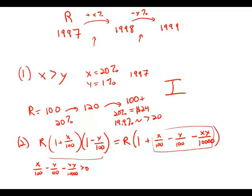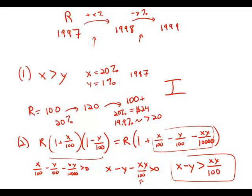Well, first thing I'm going to do is multiply it all by 100 just to get rid of some of the fractions. X minus Y minus XY over 100 greater than zero. Then move this term to the other side. X minus Y is greater than XY over 100. And lo and behold, this is the very piece of information that we're given in statement number two.